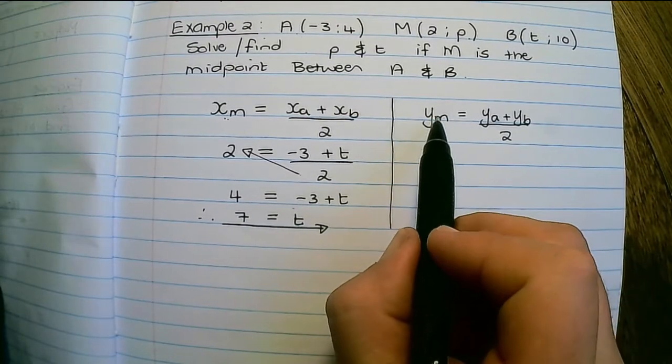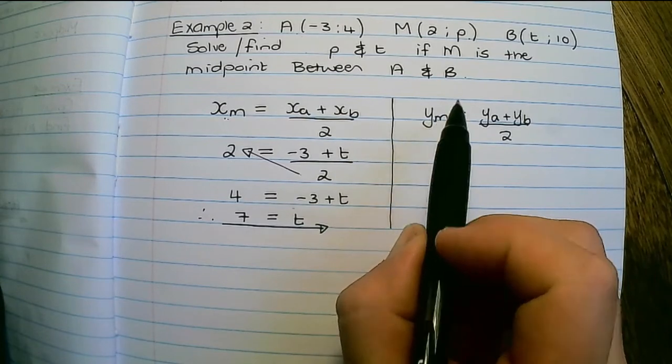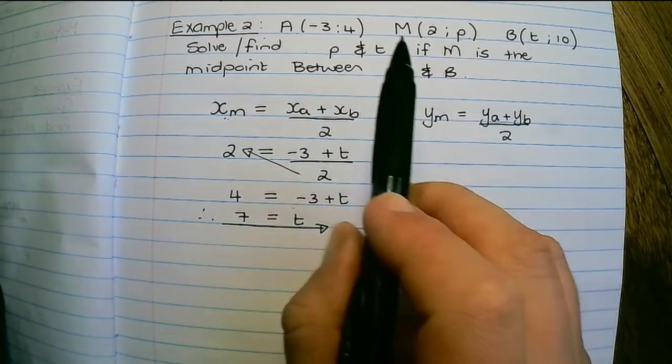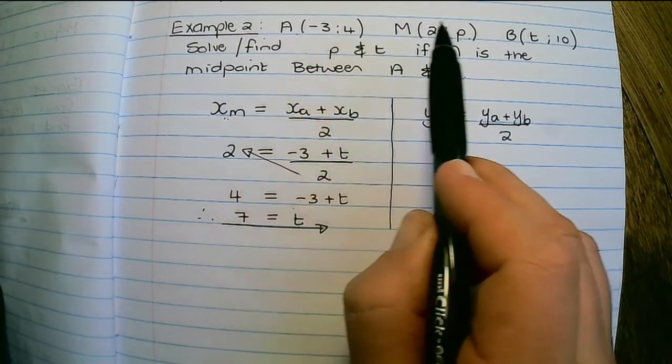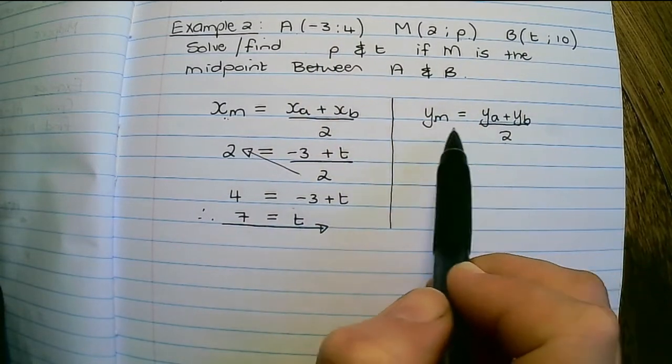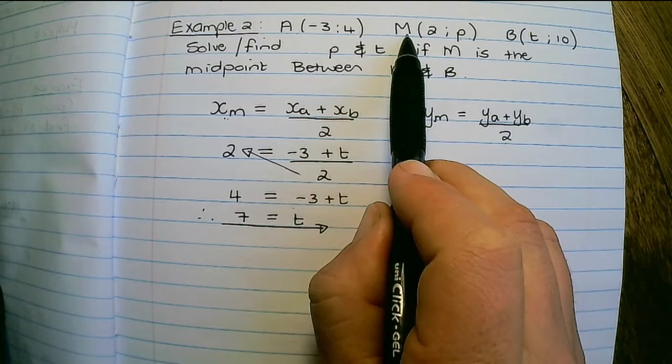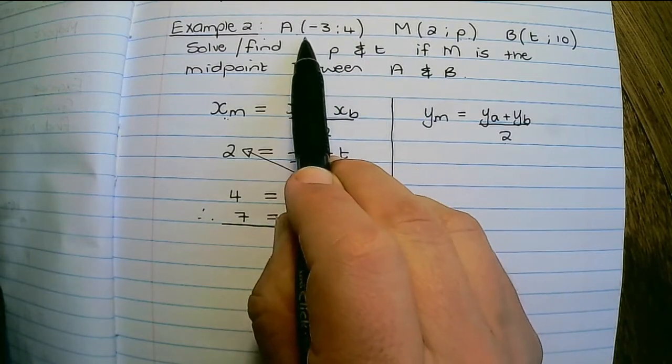Similarly, I have the y coordinate of M, which is P, equals to the y coordinate of A plus the y coordinate of B divided by two. This is true because M is the midpoint between A and B.